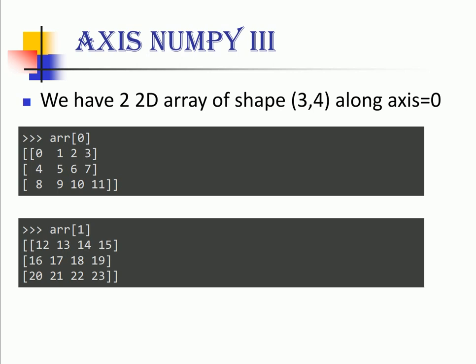So if I consider array of 0 it gives me the first grid consisting of 3 rows and 4 columns. Similarly, when I say array of 1 it would give me the second grid consisting of 3 rows and 4 columns.